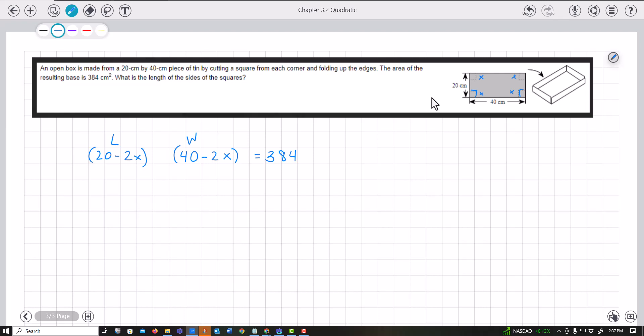So I multiply this out: 20 times 40 is 800, 20 times negative 2X is negative 40X, then negative 2X times 40 is negative 80X, and negative 2X times negative 2X is positive 4X squared, equals 384.